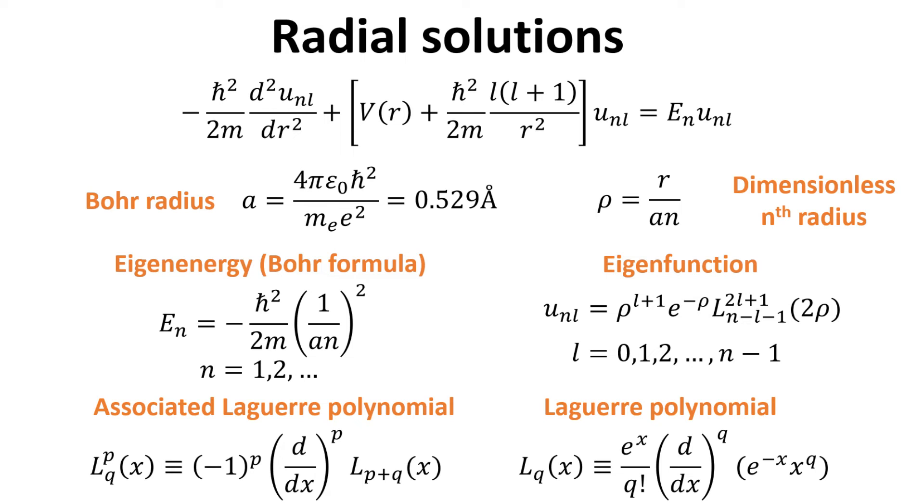The eigenfunction is given as follows, in terms of the associated Laguerre polynomials and the Laguerre polynomials. The eigenfunction U are labeled by the quantum numbers n and L, where L runs from 0, 1, 2 to n minus 1.